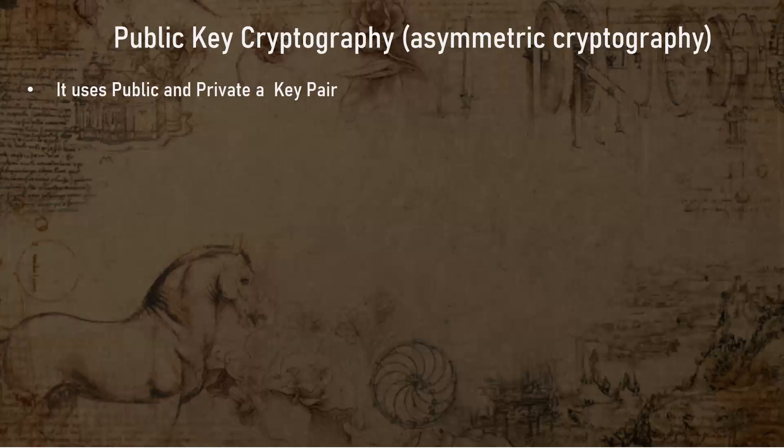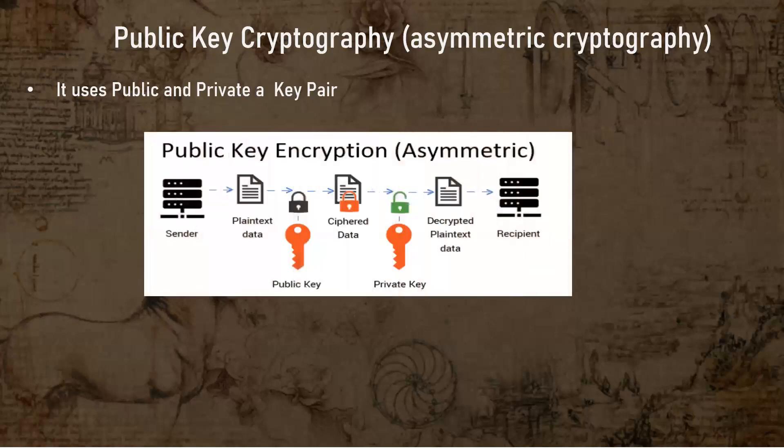When data is transferring from your browser to the server side, there are certain keys required which can encrypt the data. When it reaches the destination server, there has to be a certain other key which can decrypt your data. Then when the server sends the response back to your browser, it again encrypts the data, and when it reaches your browser, there has to be a key which can again decrypt that data. Data is transferring in both directions and is getting encrypted and decrypted in both directions — for that there are public and private keys.